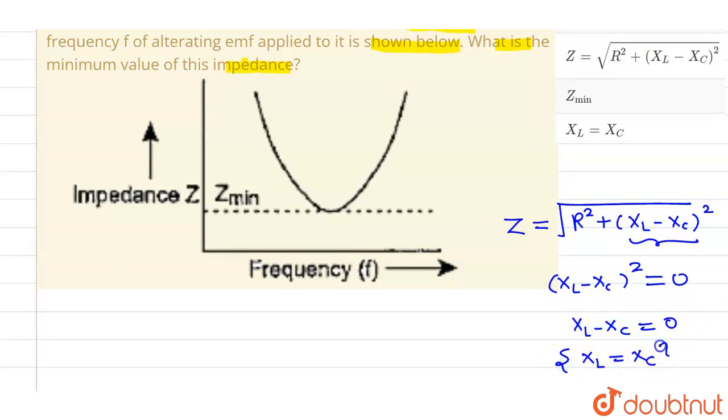Now when XL equals to XC, the minimum value of Z is given by, since this whole term is zero, we will be having root over R square only and root over R square is nothing but R. So here this minimum value of impedance is R.